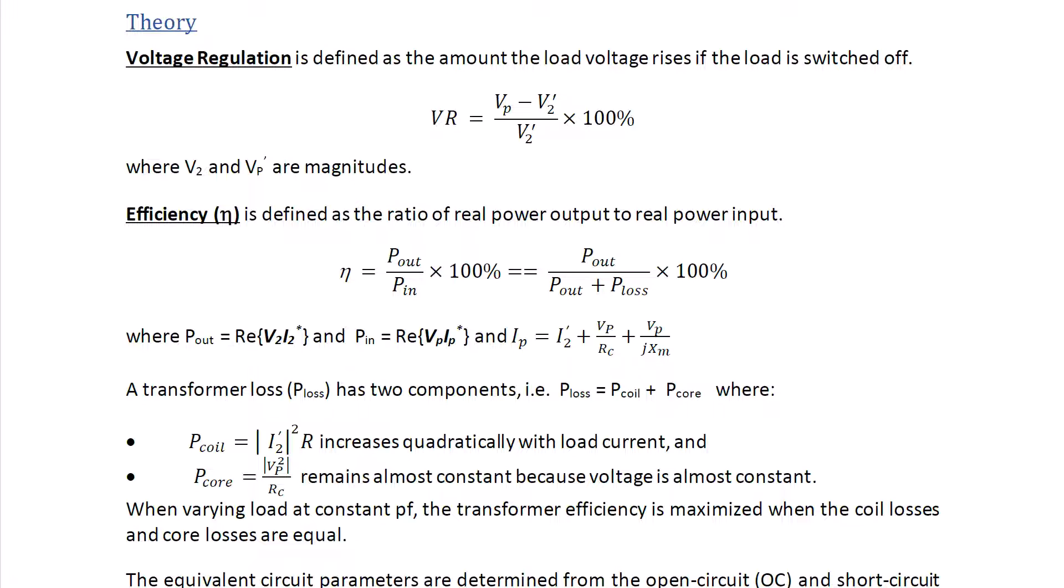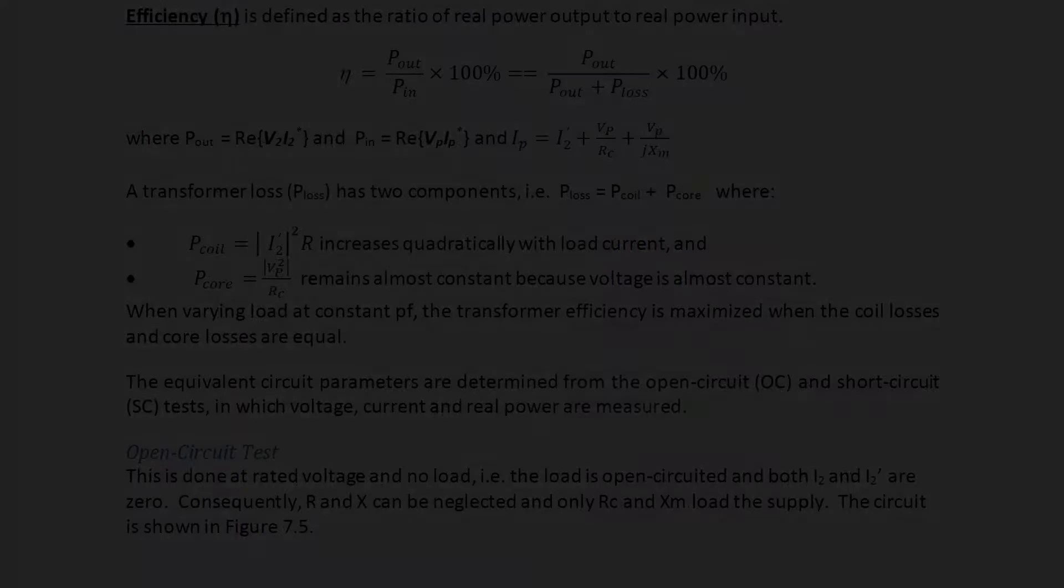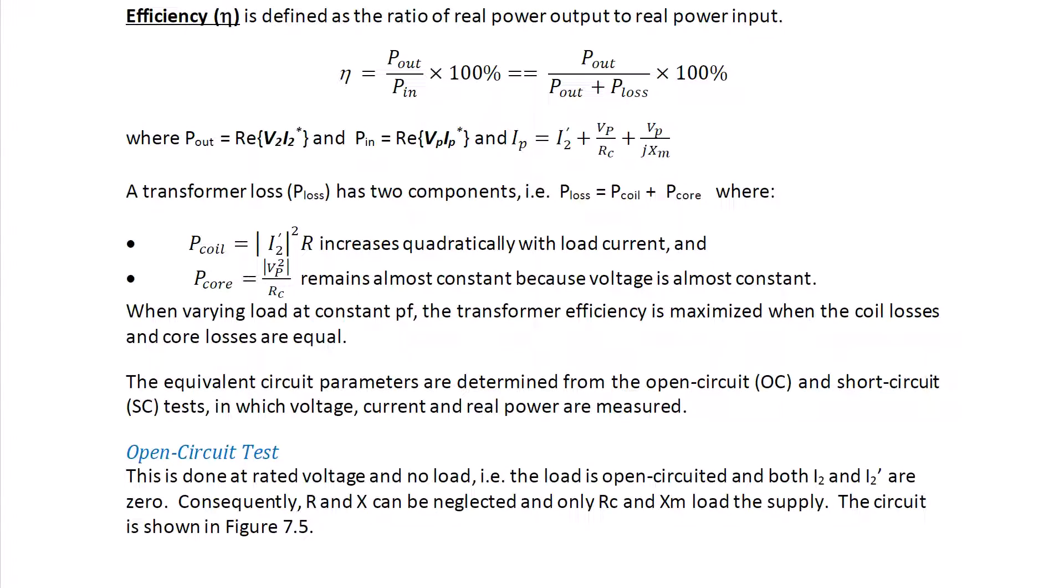Note that we saw in the previous lecture that ideally you'd want voltage regulation to be 5% or lower, and that by increasing the power factor, you can reduce the voltage regulation and increase the efficiency. The equivalent circuit parameters are determined from the open circuit and short circuit tests in which voltage, current, and real power are measured.